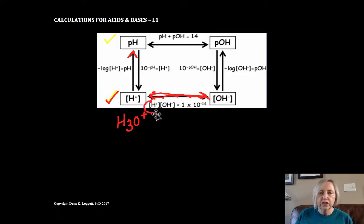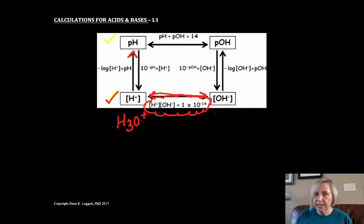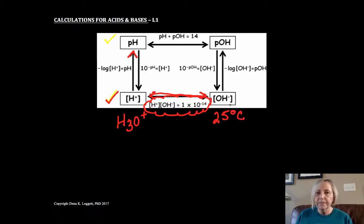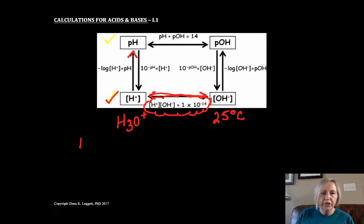A formula I discussed earlier is that [H⁺] times [OH⁻] is always equal to 1×10⁻¹⁴. I say always, but that's only true at 25°C — and most problems will be at 25°C unless clearly stated otherwise. If we have a hydronium ion concentration of, say, 1×10⁻⁶, we defined the pH as simply looking at that power.